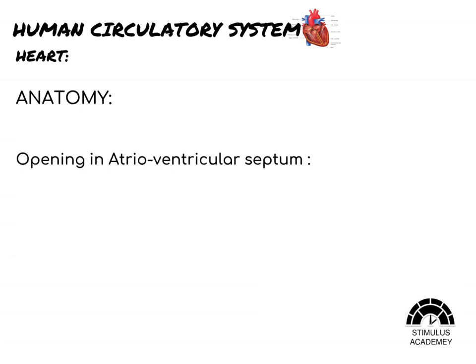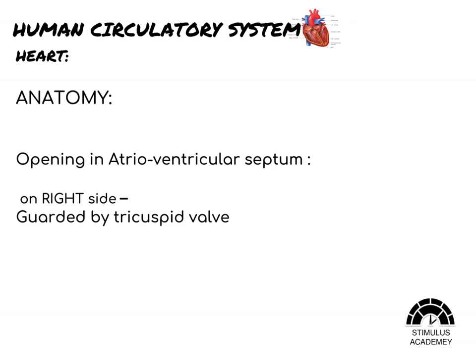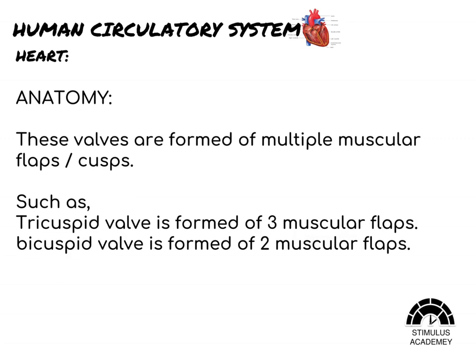The atria drain blood to the ventricles, so there should be an opening connecting them. These openings are guarded by valves which prevent the backflow of blood. On the right side, the tricuspid valve is present, and on the left side, the bicuspid valve is present. These valves are formed of multiple muscular flaps or cusps. As the name suggests, the tricuspid valve is formed of three muscular flaps, whereas the bicuspid valve is formed of two muscular flaps.